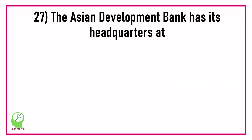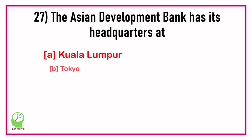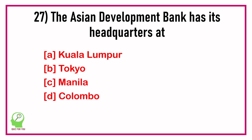Question number twenty-seven: The Asian Development Bank has its headquarters at which of the following? Options are: Kuala Lumpur, Tokyo, Manila, Colombo. Answer: Manila.